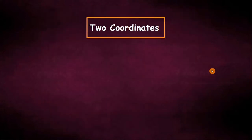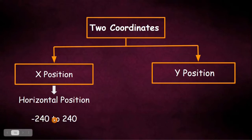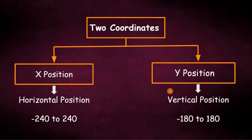So there are two coordinates. They are x position and y position. What is x position? This value determines the horizontal position of a sprite and it has the range of minus 240 to plus 240. And what is y position? The value determines the vertical position of a sprite. It ranges from minus 180 to plus 180.